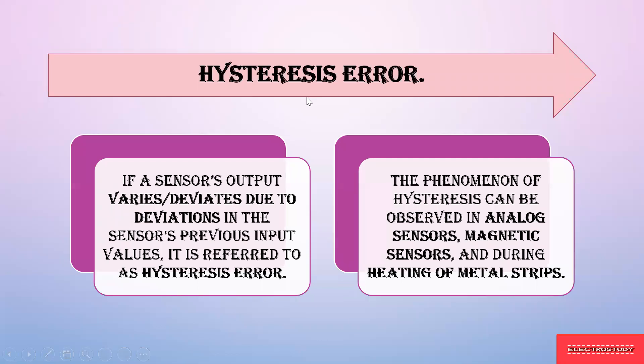Next is hysteresis error. Hysteresis error is a deviation due to the sensor's input values — if a sensor's output deviates and already has some error rate, and it deviates even further, that is known as hysteresis error. You can observe this in analog sensors and magnetic sensors. For example, when heating metal strips, as the metal keeps heating, the temperature keeps increasing, and there is variation starting from the very beginning of heating the metal strip — that is hysteresis error.